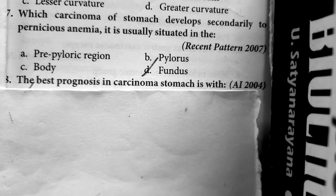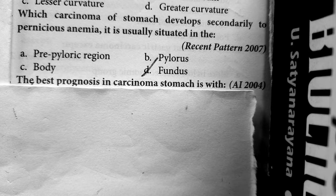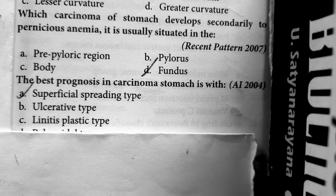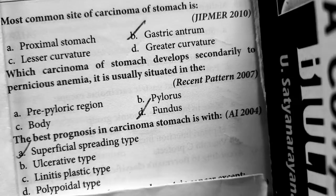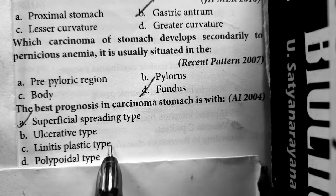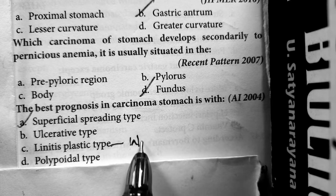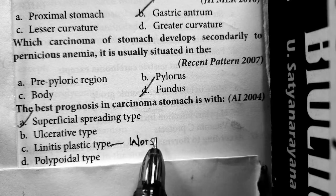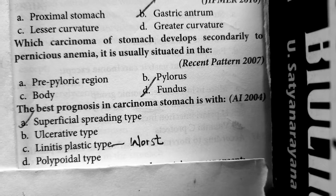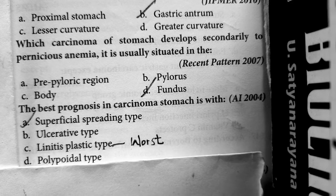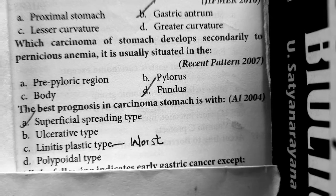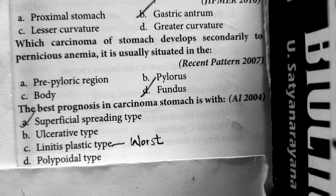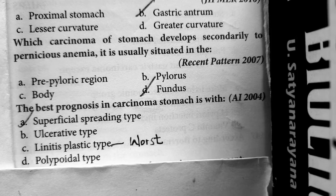Question 3: The best prognosis in carcinoma stomach is seen in which type? Among all types, the superficial spreading type has the best prognosis, whereas linitis plastica has the worst prognosis. So the best prognosis in carcinoma stomach is superficial spreading type, and the worst prognosis is linitis plastica.